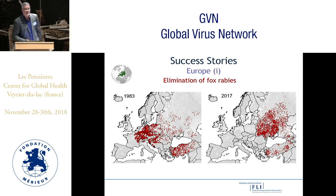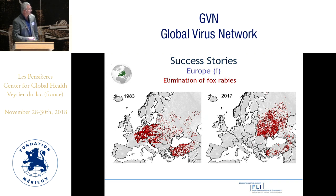The elimination of fox rabies in Europe is the preeminent example of a successful control of a zoonotic disease in wildlife. Using oral vaccination of foxes, we were able to eliminate fox-mediated rabies from large parts of Western and Central Europe. This is the situation 40 years ago, and you can see what a difference there is today.